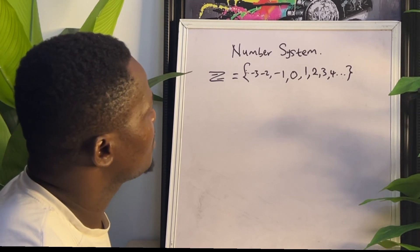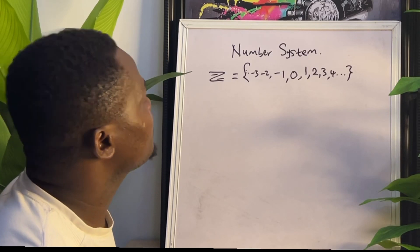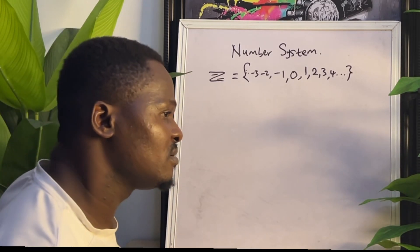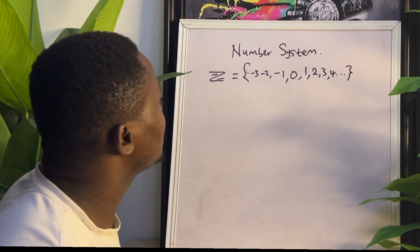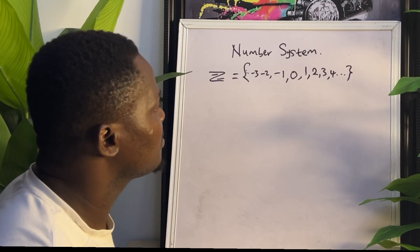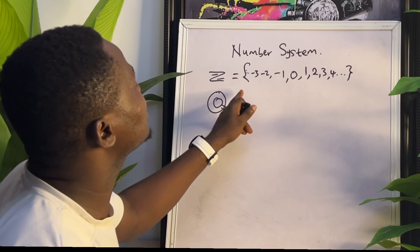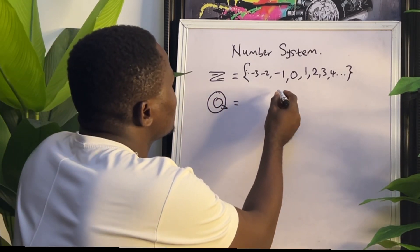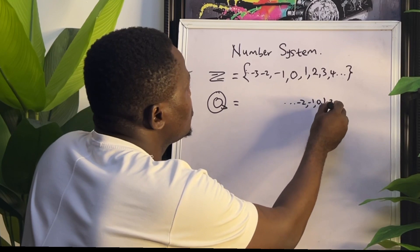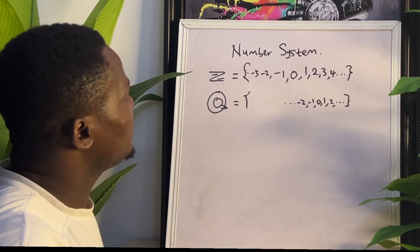Inside integers, the natural number system is found alongside zero and negative whole numbers. Then there is another number system that is bigger and harbors all the integers. That number system is known as the rational number system, symbolically written as Q. The rational number system has all the integers inside — minus dot dot dot, minus two, minus one, zero, one, two, dot dot dot — included inside the rational number system, but they are not the only things included.